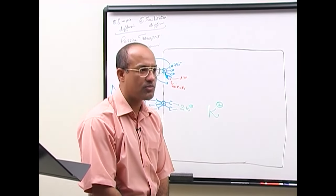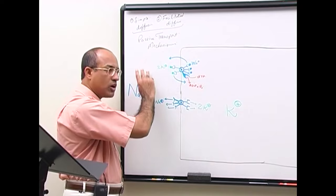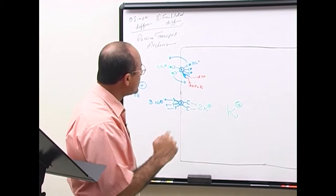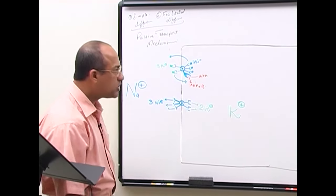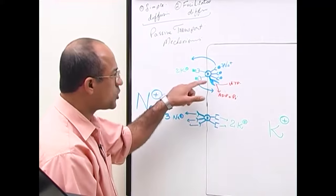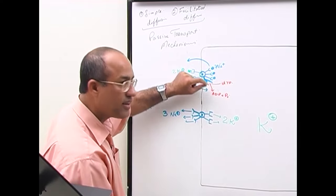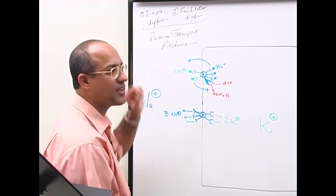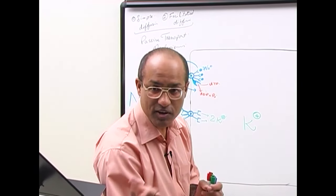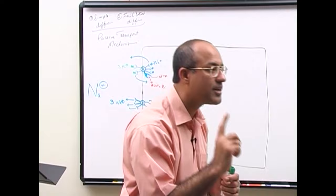Sodium-potassium ATPase transporting sodium out of the cell and potassium into the cell is an example of active transport. In this active transport mechanism, ATP is used directly at the transport site—there is a direct input of energy into the transporting mechanism.